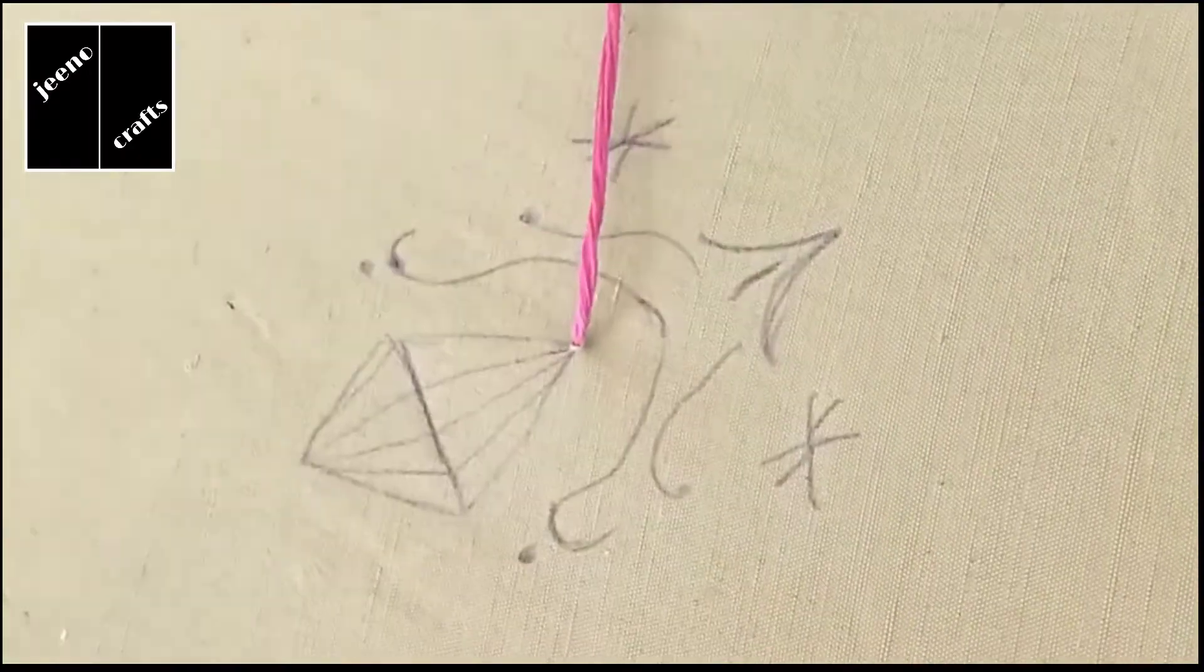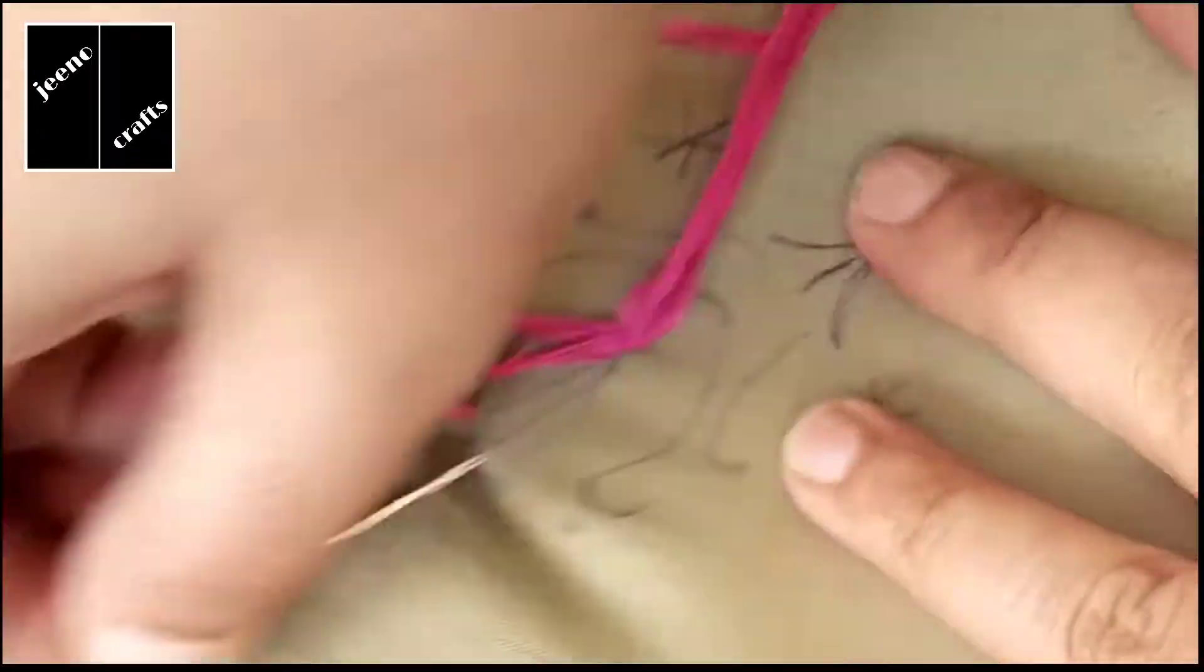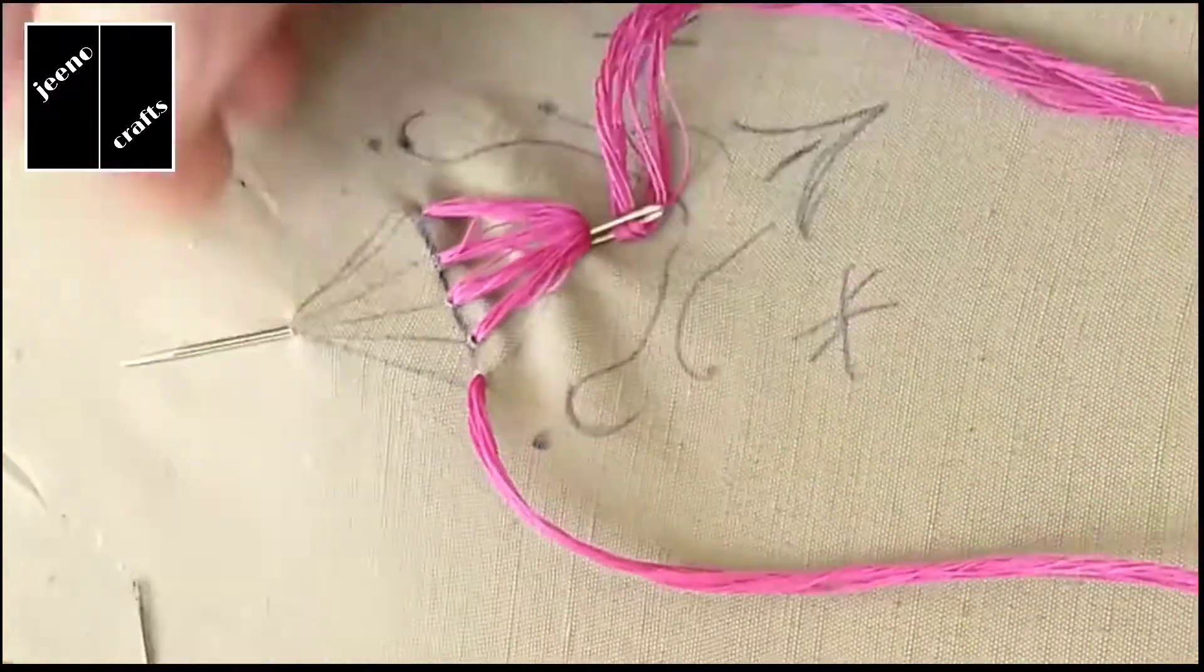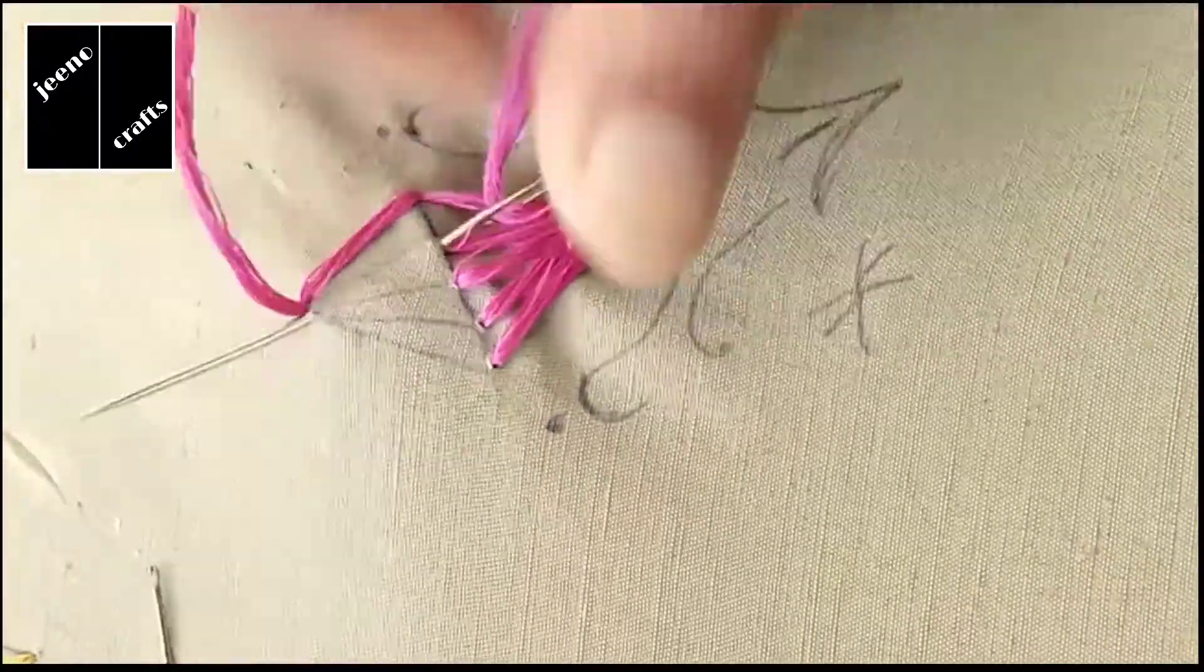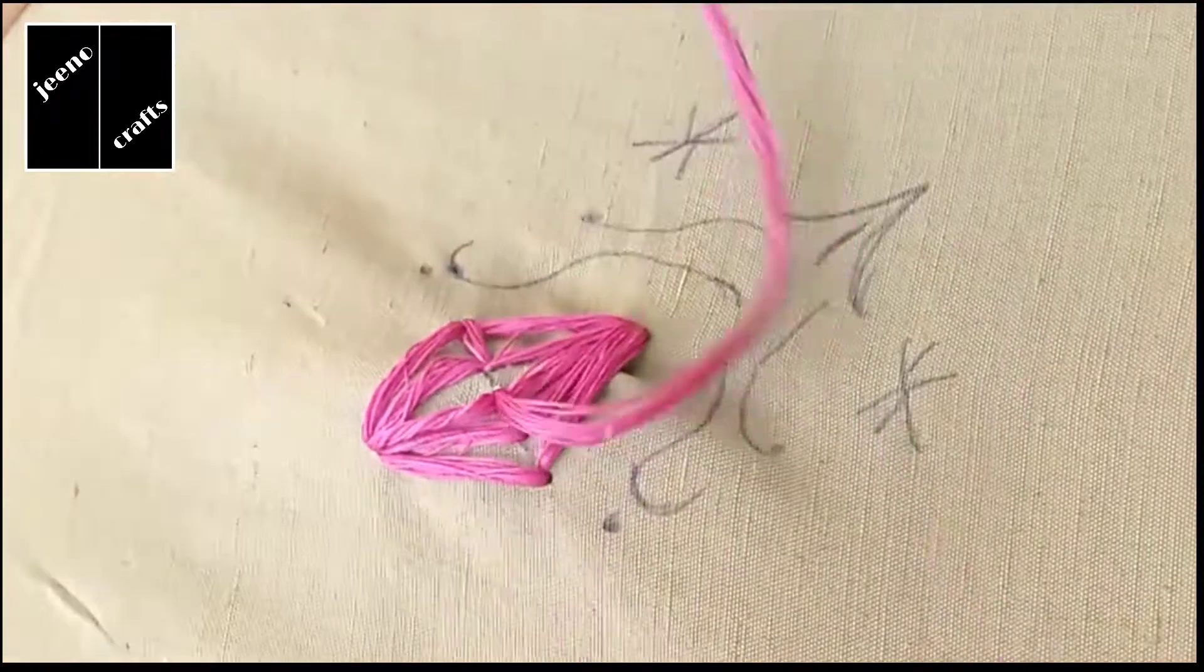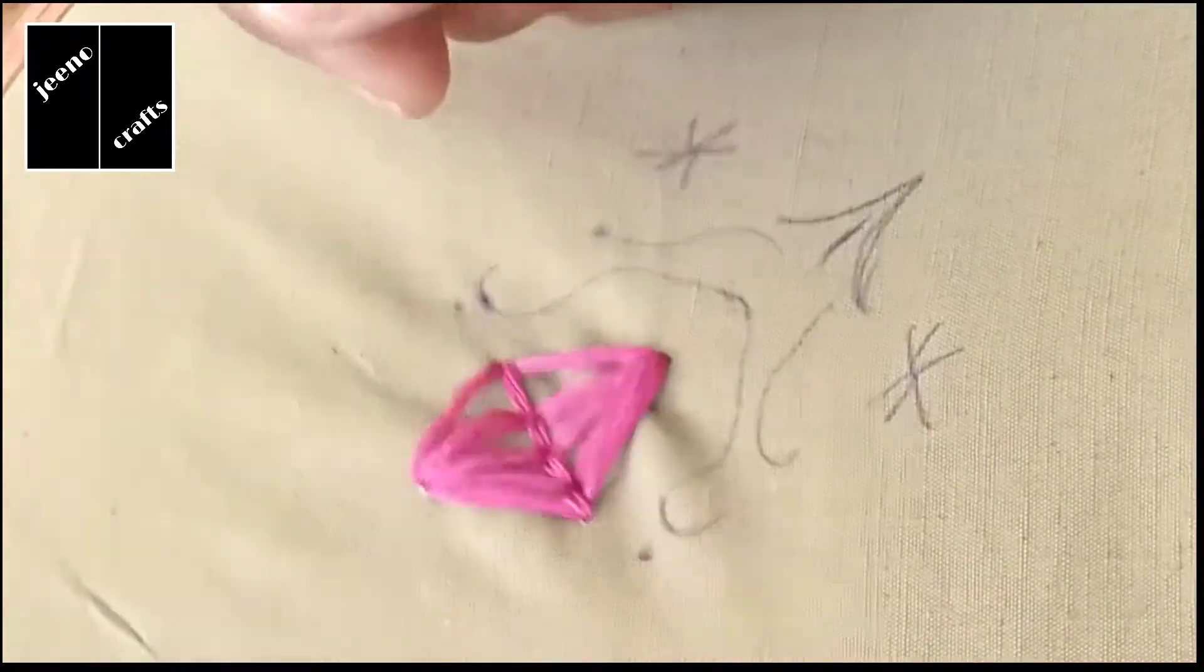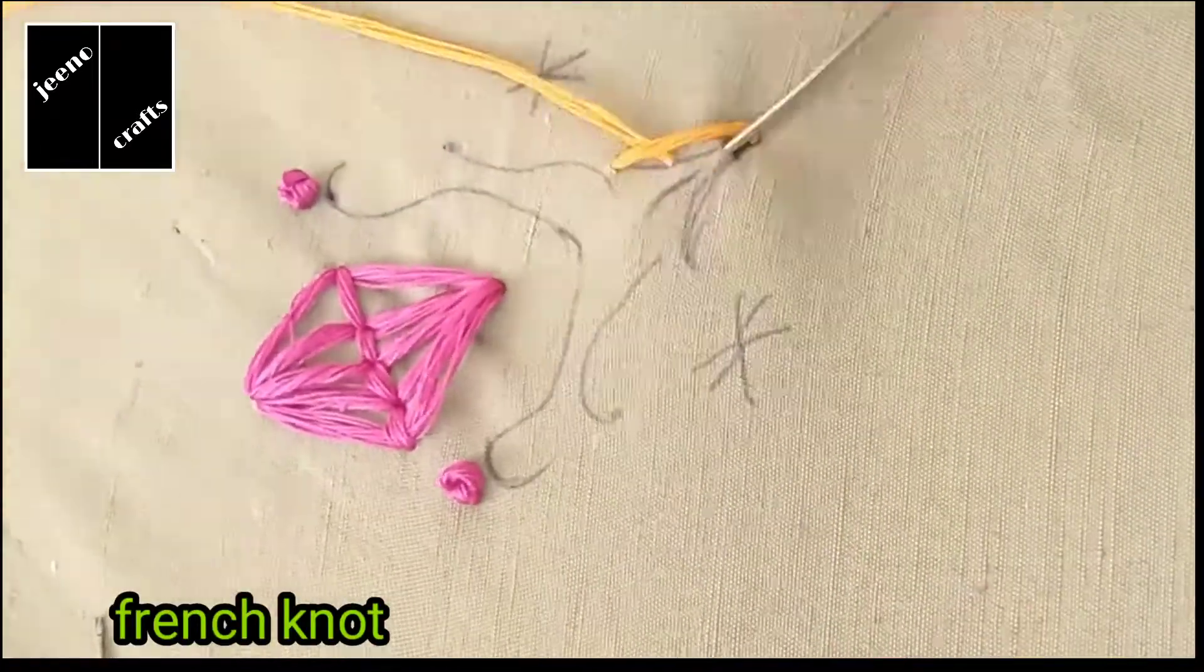Hi friends, welcome back to Geno Crafts. Today's video is about how to make a border design. For making this border design, I have drawn a simple design to decorate your dresses. It's a combination of different stitches. You can learn chain stitch, backstitch, and French knot stitch here in this video because I have used multiple basic embroidery stitches.